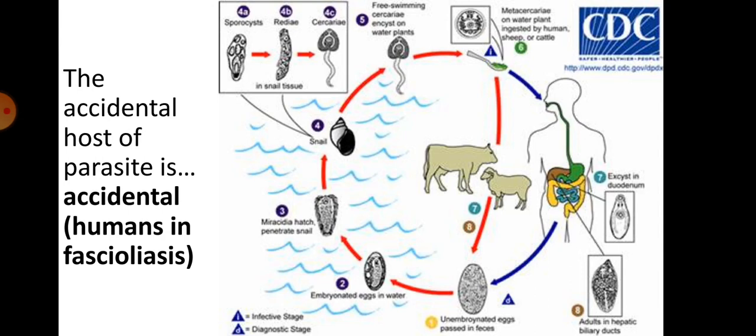The accidental host of a parasite is called the accidental host. An example is humans in the case of fasciolosis — fasciolosis is a disease of ruminants (sheep and cattle), with the snail as the intermediate host. Within the snail-ruminant life cycle, humans may accidentally become infected and are then called the accidental host of fasciolosis.